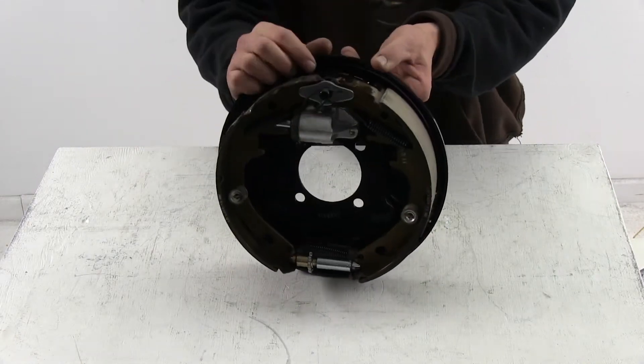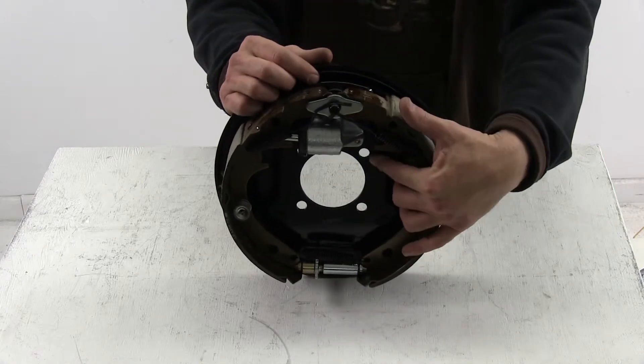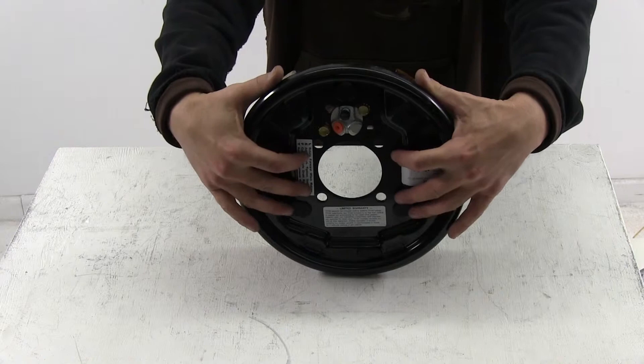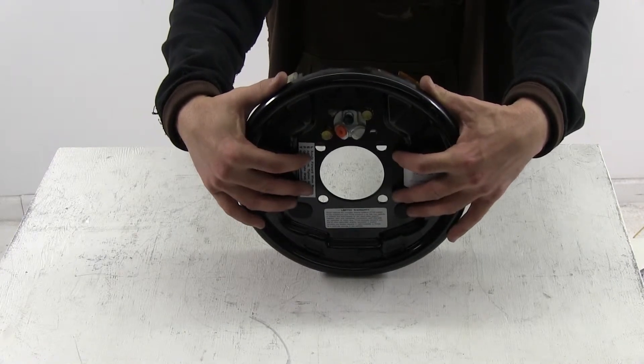The mounting has four holes drilled through the backing plate to bolt up to your axle. You can see them coming through the back here also.